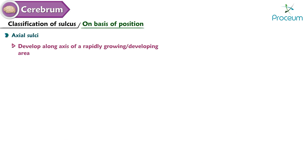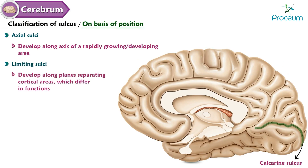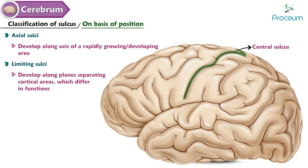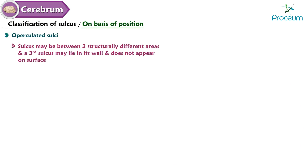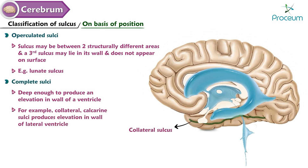On the basis of position, there are four types of sulci. Axial sulci develop along the axis of a rapidly growing area — for example, the calcarine sulcus. Limiting sulci develop along planes separating cortical areas of different functions — for example, the central sulcus separating the frontal motor cortex from the parietal sensory cortex. Operculated sulci occur between two structurally different areas where a third sulcus lies in the wall and does not appear on the surface — for example, the lunate sulcus. A complete sulcus is deep enough to produce an elevation in the wall of a ventricle — for example, the collateral and calcarine sulci produce elevation in the wall of the lateral ventricle.